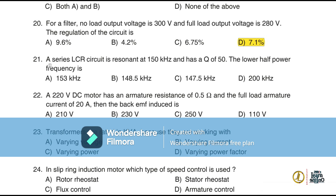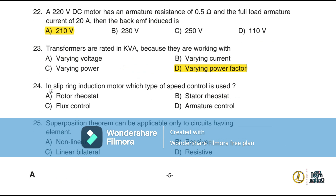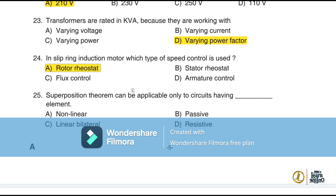Question 21: A series LC circuit resonant at 150 kHz with a Q of 50 has a lower half-power frequency of 148.5 kHz (option B). A 220 V DC motor with armature resistance of 0.5 ohm and full-load armature current of 20 A has a back EMF of 210 V. Transformers are rated in kVA because they work with varying power factors. In a slip ring induction motor, rotor reactor rotor resistance speed control is used (option A).